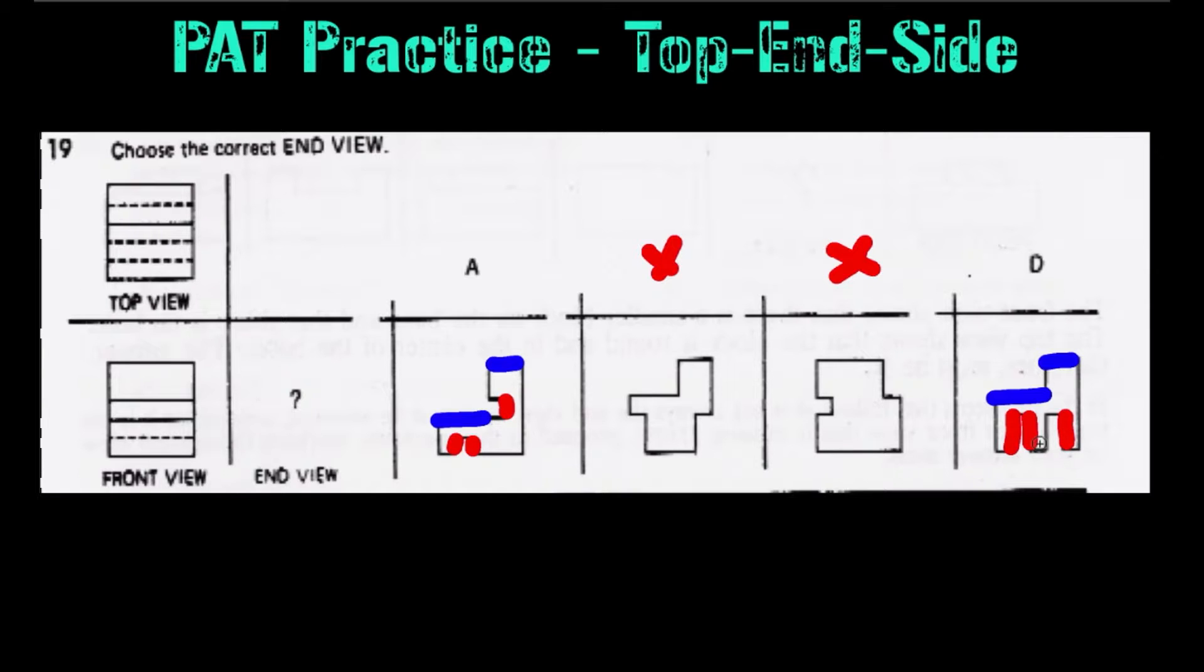Therefore, the solid line kind of trumps the dotted line. So therefore, you wouldn't see this right here. And therefore, we have to leave D for now. We can't eliminate it yet just based on this perspective alone.